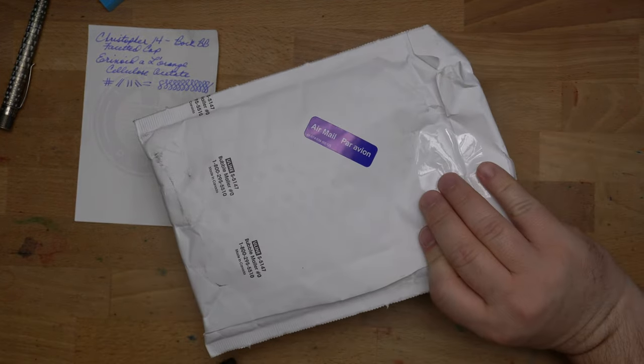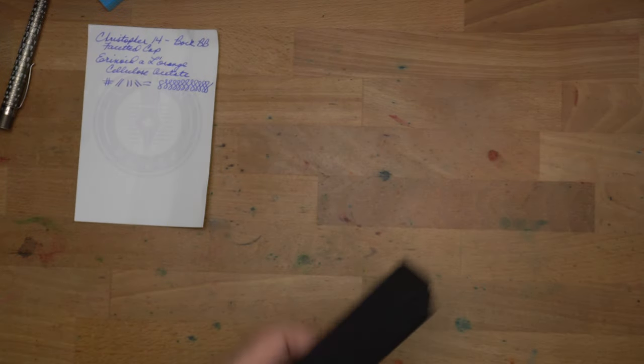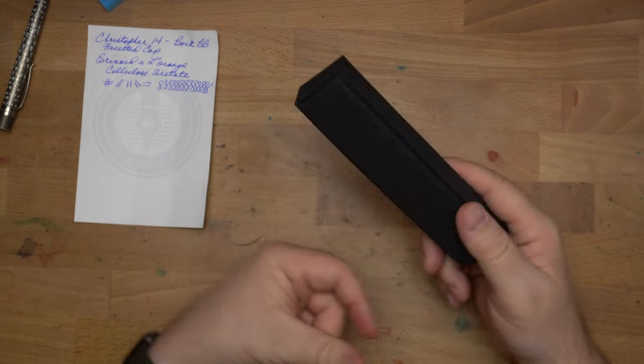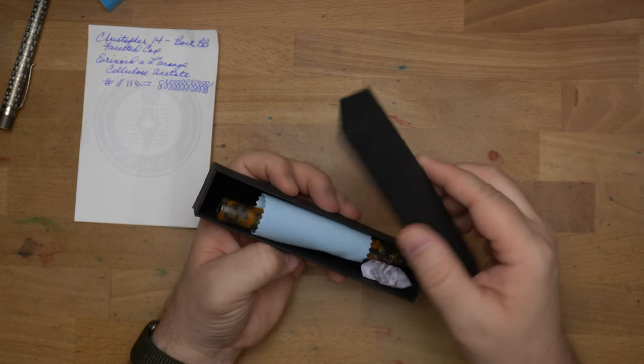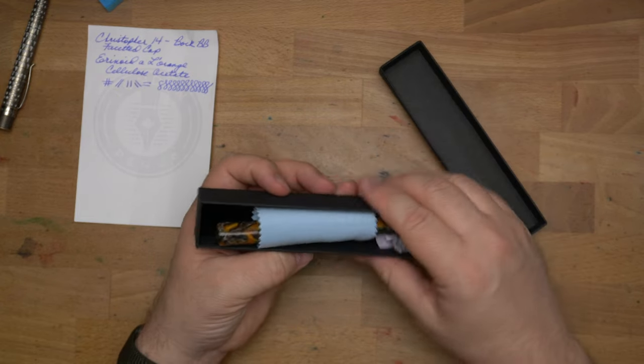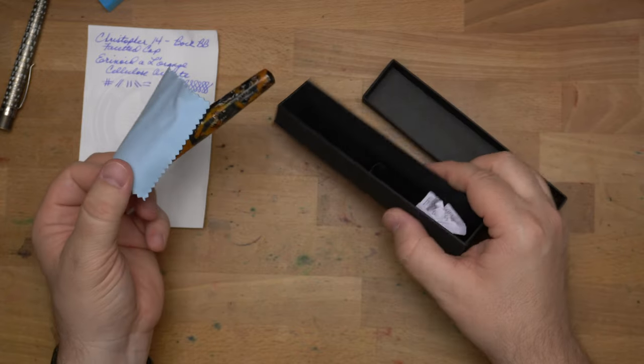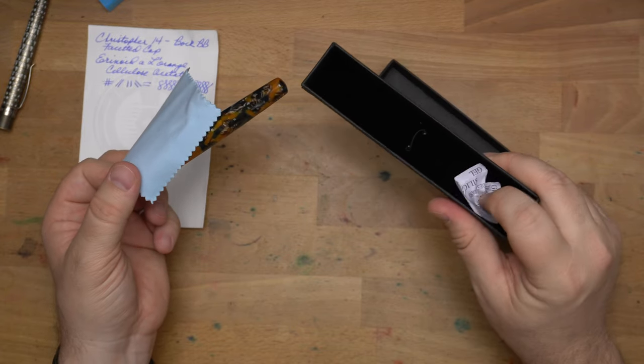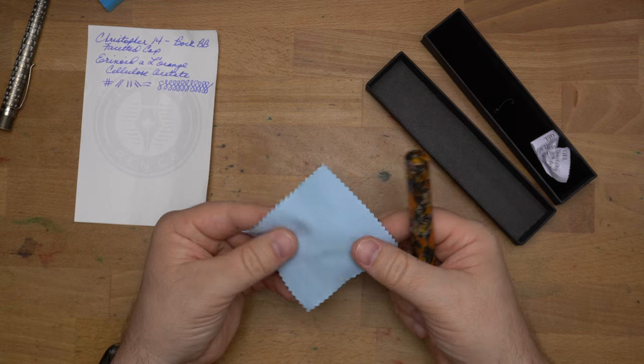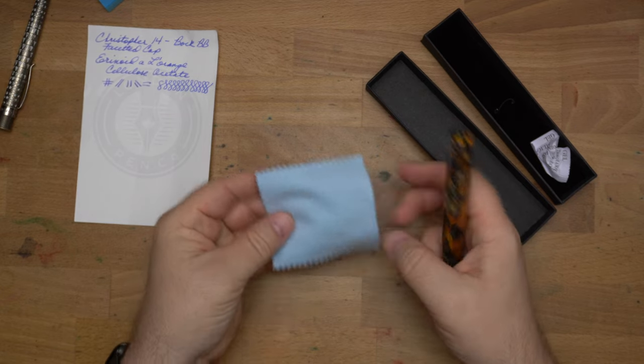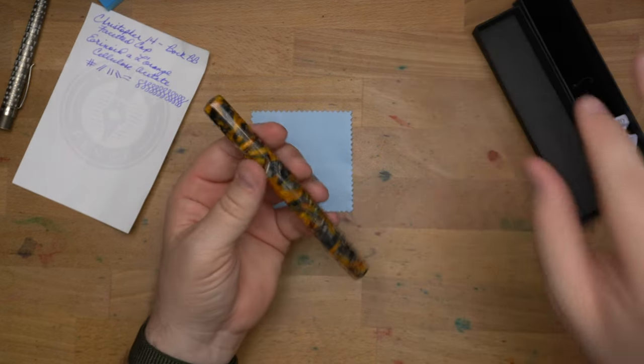Here's the pen. You can see airmail par avion, which is from Canada, the great country of Canada. Our neighbor to the north comes in a nice little box. I appreciate that. I like some simple packaging. There's a little loop down there and a little silica gel. A nice little polishing wiping cloth, and then here is the pen.